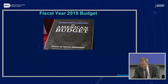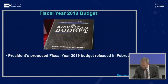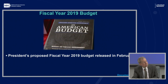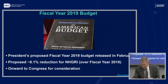With our fiscal year 2018 budget in place, budget attention has turned to fiscal year 2019. The President released his proposed FY2019 budget in February. The bottom line is that the President has called for an overall budget reduction for NIH, which would involve a proposed 8.1% reduction for NHGRI over fiscal year 2018. Of course the proposed budget has moved to Congress for their consideration, and we will see how this plays out in the coming months.